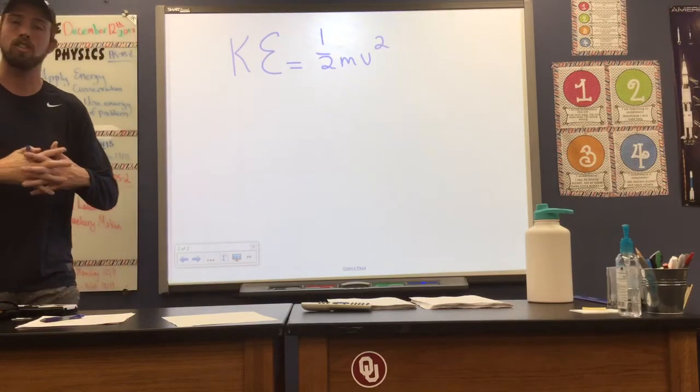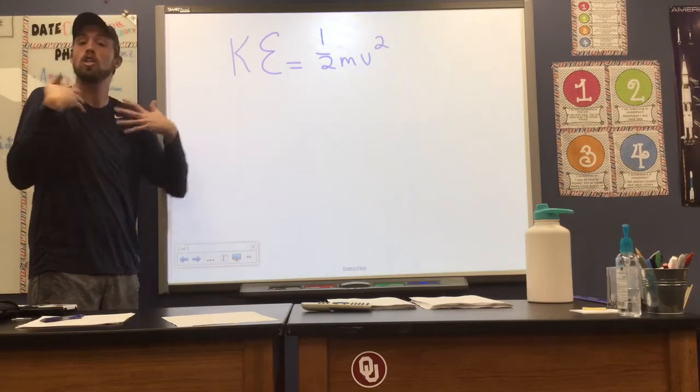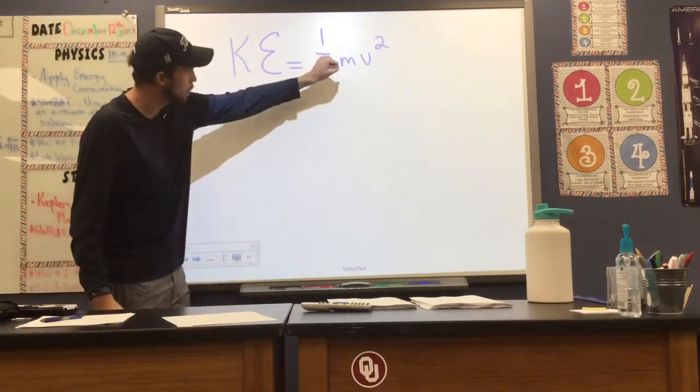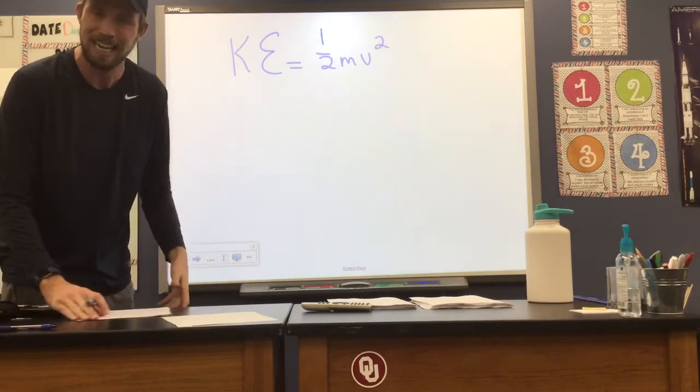It's equal to one-half times the mass of our object times its velocity squared. We refer to kinetic energy as the energy of motion, and this equation describes how much energy is related to the motion of an object. As long as we know the object's mass and its velocity, we can solve for how much kinetic energy it has.